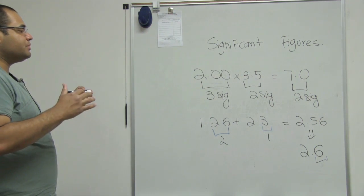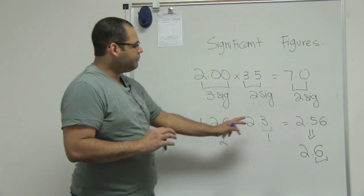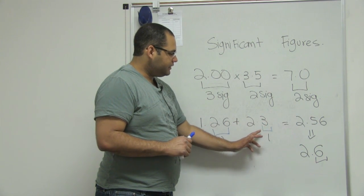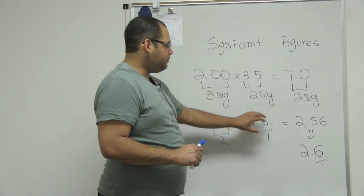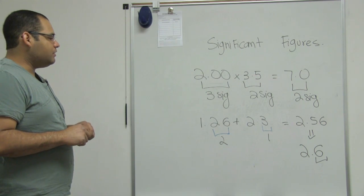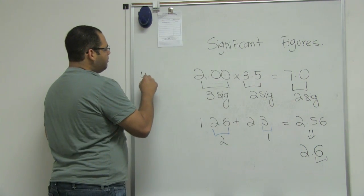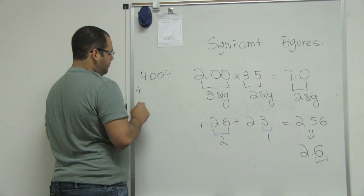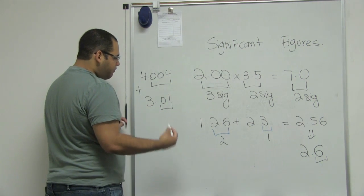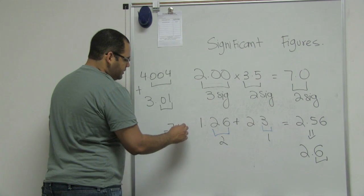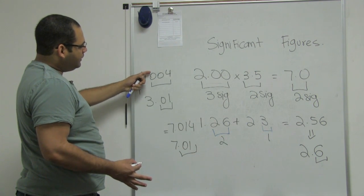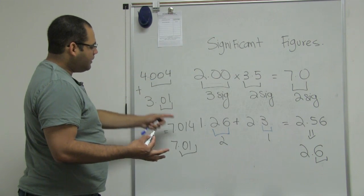Remember, for addition and subtraction we're talking about precision. This number is more precise, this number is least precise, and I will keep the same amount as the least precise. The tenth decimal place versus the hundredth — I'll keep one. For example, if I have 4.004 and I'm adding 3.01, I have three decimals here and two decimals here. Therefore, my final answer will be only two decimals — 7.014 rounds to 7.01. I count how many decimal places I have: three here, two here, and two is smaller, so I keep two as my final answer.